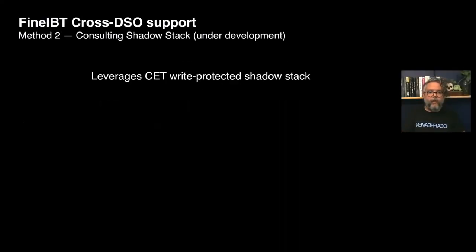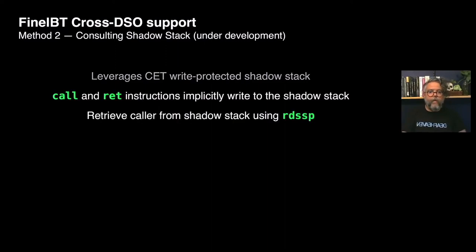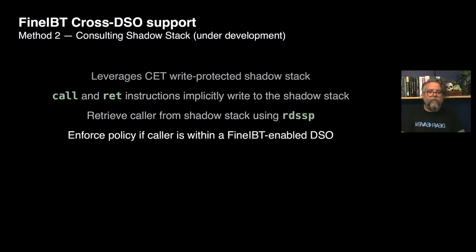The previously described scheme actually requires all DSOs to be FineIBT-enabled for the policy to be enforced. Because this can be very limiting, we started exploring different models to enable cross-DSO compatibility. This method is currently under development and uses the shadow stack also provided by CET, but with a different purpose. The shadow stack is in place to prevent control flow hijacking in the backward edges. When a shadow stack is in place, every call instruction copies the return address pushed on the stack to the shadow stack, and when a return happens, this copied address is verified for a match. By using the instruction RDSSP, we can read the shadow stack pointer and retrieve the caller's addresses, identify the function calling into a FineIBT-enabled function, verify if it belongs to a FineIBT-enabled object, and decide to enforce the policy based on that.